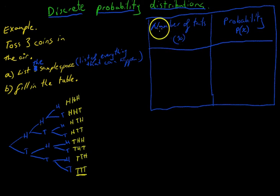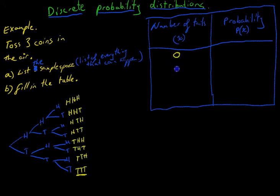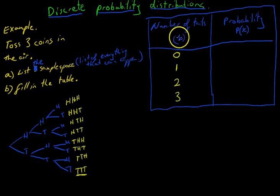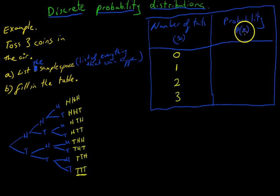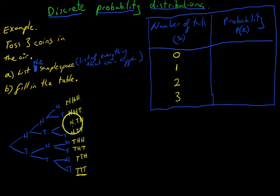Now we want to fill in this table, which has two columns: the number of tails that occurred and the probability that that would happen. You could have anything from no tails to one tail, two tails, or all three tails. If the number of tails is denoted by lowercase x, the probability of it happening is written as P(x). The only way that zero tails can happen is if there are three heads, and that happened once out of eight possibilities, so the probability of no tails is one in eight.